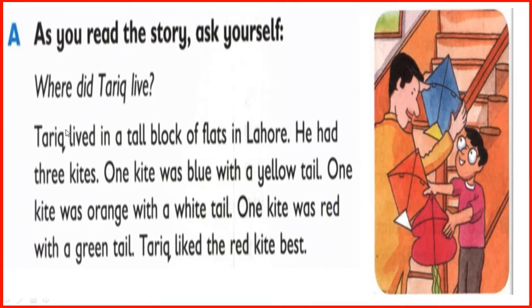I am reading again. Tariq lived in a tall block of flats in Lahore. He had 3 kites. One kite was blue with a yellow tail, one kite was orange with a white tail, one kite was red with a green tail. Tariq liked the red kite best.